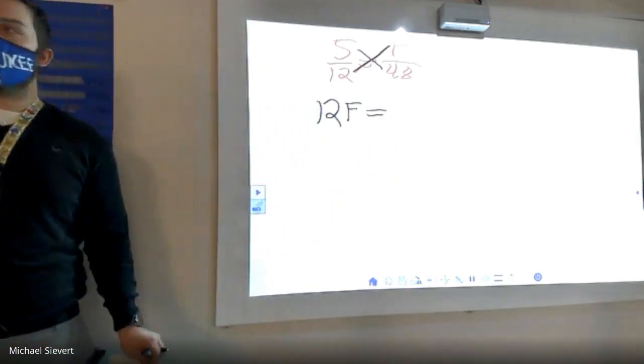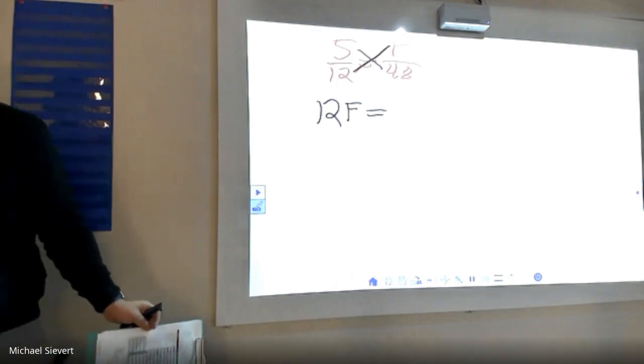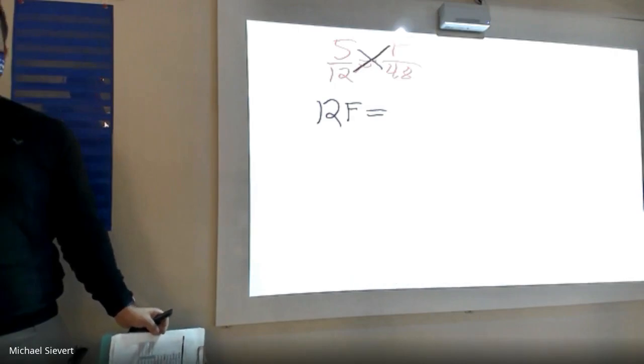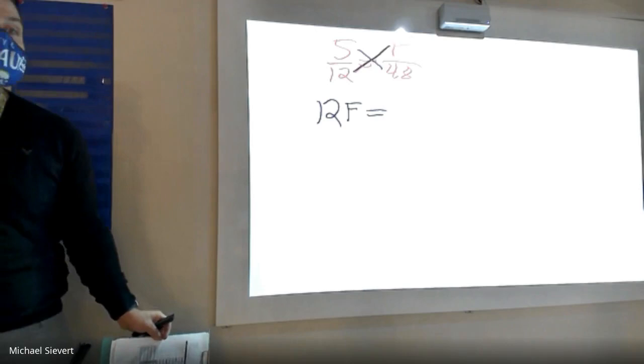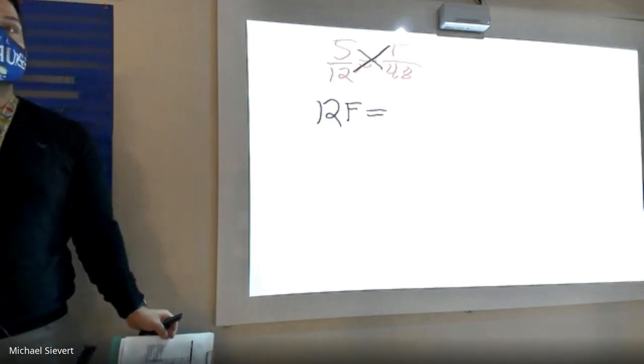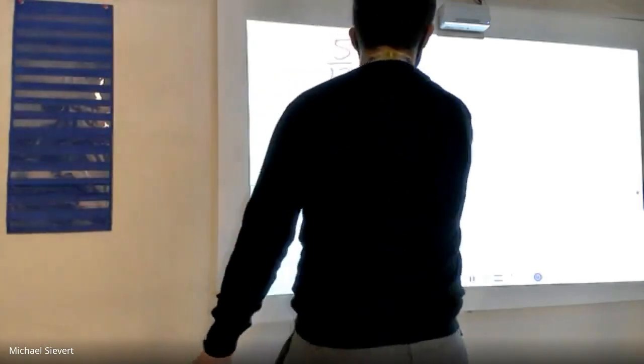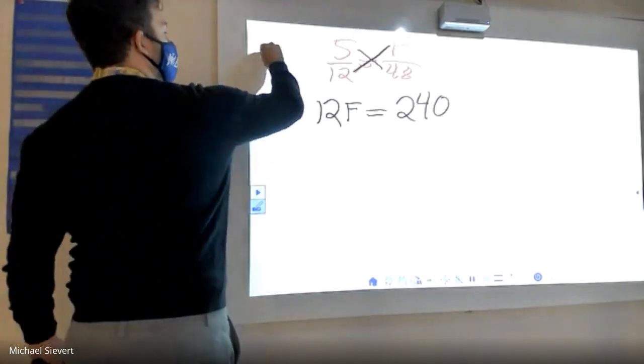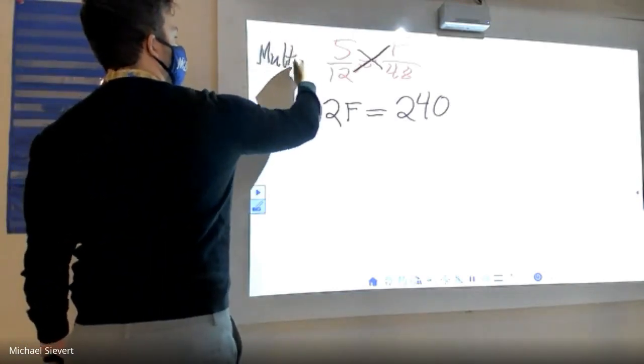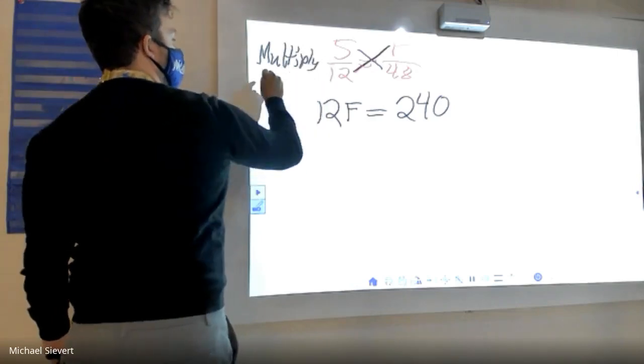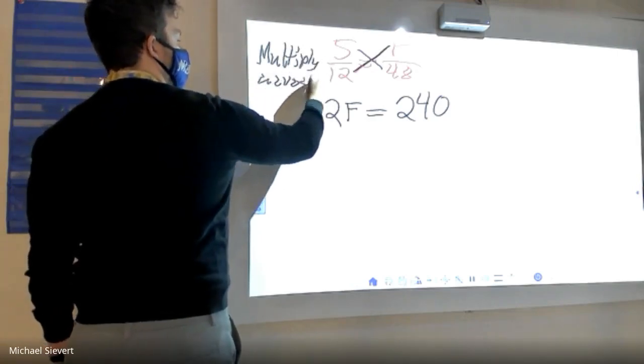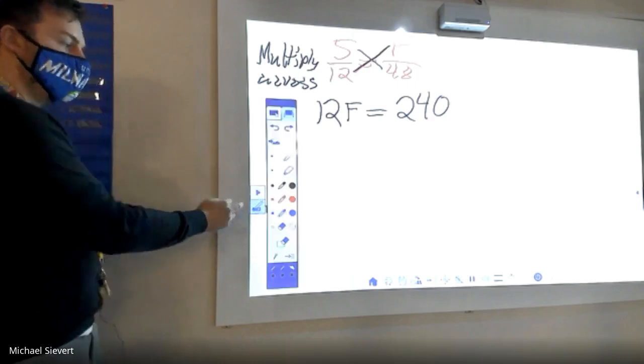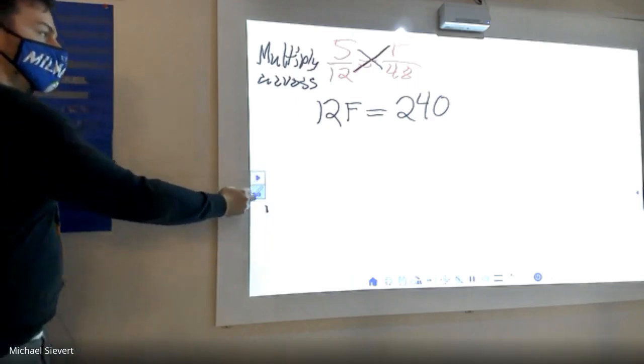What's five times 48? 240. So up here we multiply across. Now, make sure you're looking up here, because like I said, this gets confusing. Then we divide.